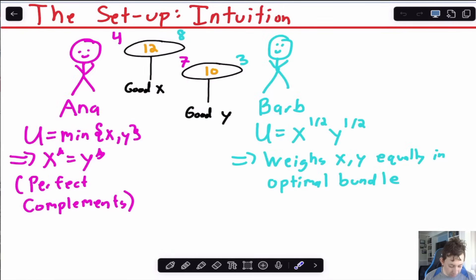Let's think about the intuition. We'll call these people Anna and Barb instead of person A and person B. If we think about two tables, a table for good X and a table for good Y, well at the table for good X there are 12 units total because Anna brought four and Barb brought eight. The good Y table, Anna brought seven, Barb brought three for a total of 10.